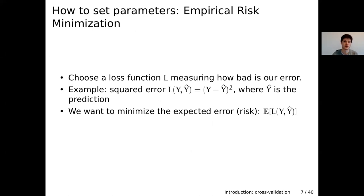To select the model coefficients, we choose a loss function that tells us how bad our prediction is. For linear regression, we choose the squared error — the square of the difference between the true output Y and our prediction Y-hat — and we want this error to be small. So we want to minimize the expected error on some new example, for example when we deploy our model in a hospital.